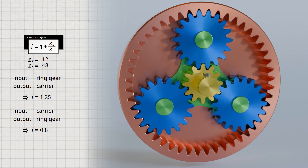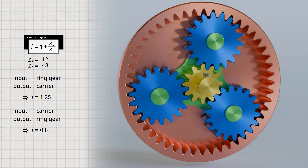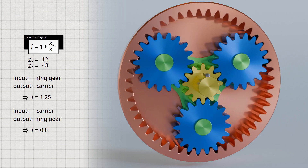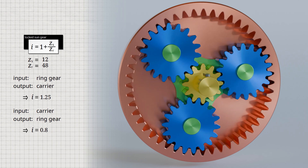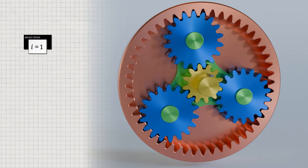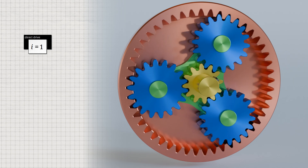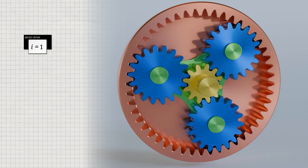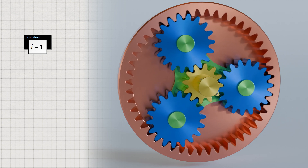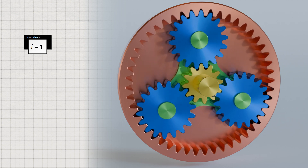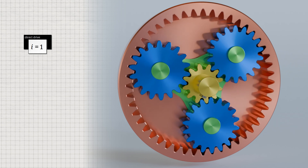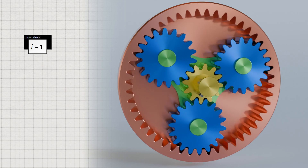With shiftable gearboxes in particular, it should not be forgotten that a so-called direct drive is also possible. In this case, all components of the planetary gearbox are firmly locked together, and the transmission ratio is 1. Such a direct drive is used, for example, in 3-speed hub gears as the second gear.